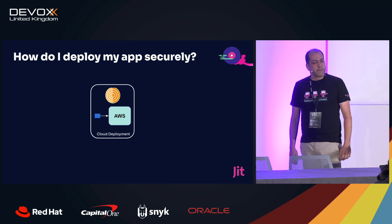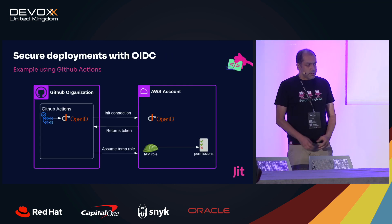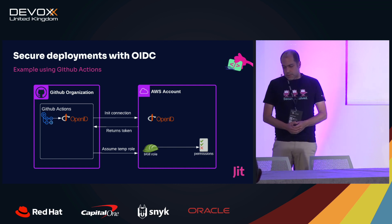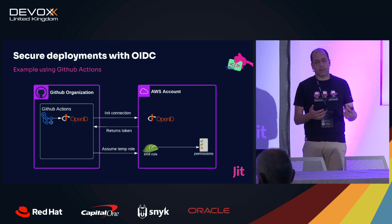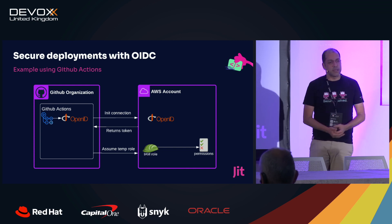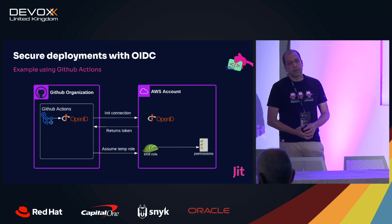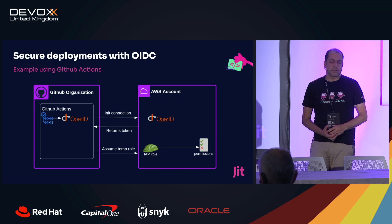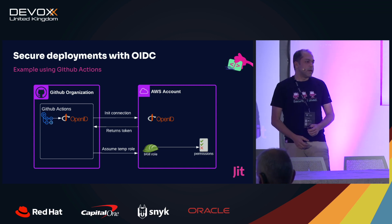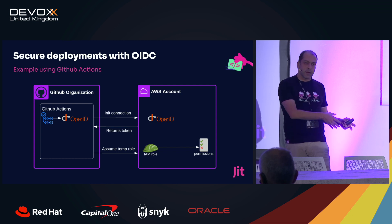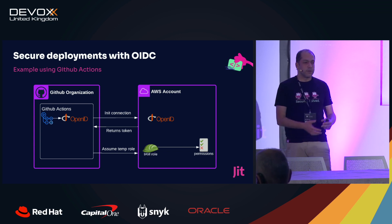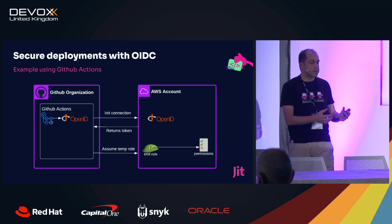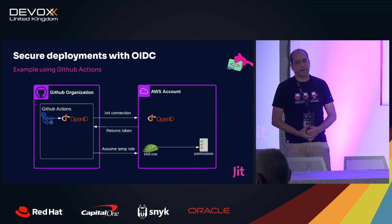For deploying your application to the cloud, you could store a key pair in your CI system like GitHub Actions, but again you face the risk of key theft. There is a better approach: GitHub supports OpenID Connect (OIDC), which creates a trust relationship between GitHub — your specific organization — and your AWS account. With OIDC there are no keys stored, so no one can steal secret information to access your AWS environment from another place.